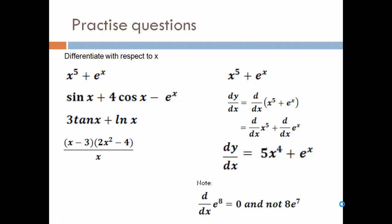One thing to note about e^x: you can differentiate it only as long as x is the variable. If you have e raised to some constant number — like e⁸ — that is not a variable, so its differentiation is 0. Please don't write 8e⁷ or n·e^(n−1) for such cases.